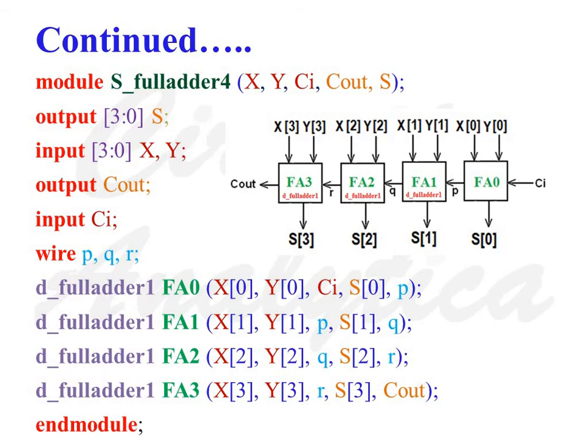Then the line input c_i defines c_i as an input port. Then three internal signals are defined as wire p, q, r semicolon.